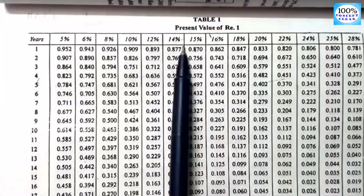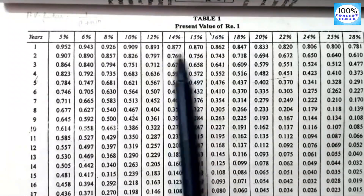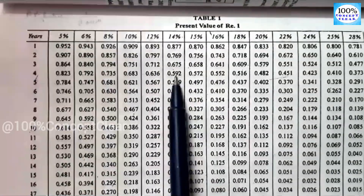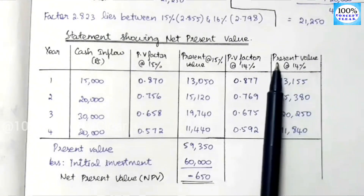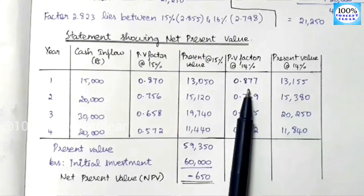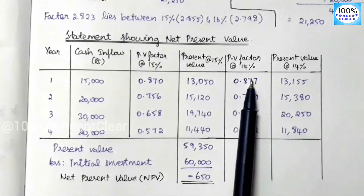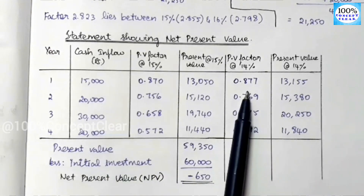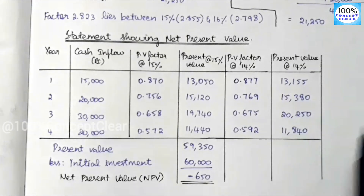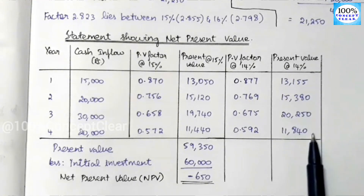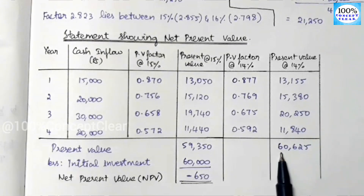In Table 1, we look up the PV factor at 14% for all 4 years. We get 4 PV factors at 14%. We multiply the cash inflows by the 14% PV factors and add all the present values. When we add the present values at 14%, we get 60,625.